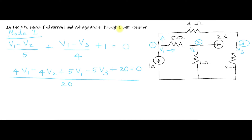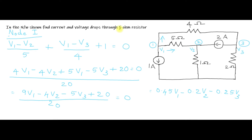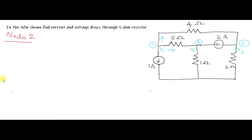Combining terms: 9V1 minus 4V2 minus 5V3 plus 20 divided by 20 equals 0. Simplifying: 9/20 = 0.45, so 0.45V1 minus 0.2V2 minus 0.25V3 plus 1 equals 0. Name this as Equation 1.